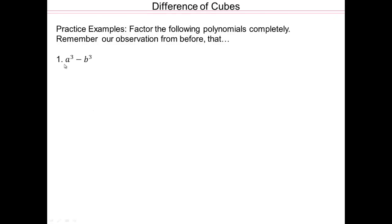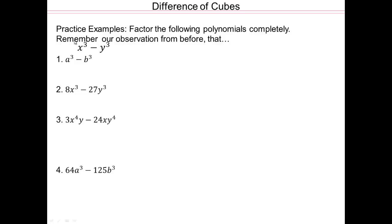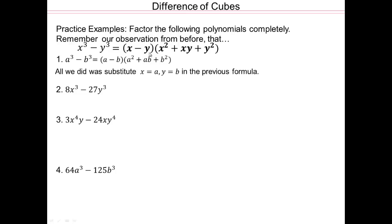Let's see if we can use the formula now. So a cubed minus b cubed — what is that? Our formula: x cubed minus y cubed was x minus y times x squared plus xy plus y squared. So we're just substituting a for x and b for y and rewriting it.